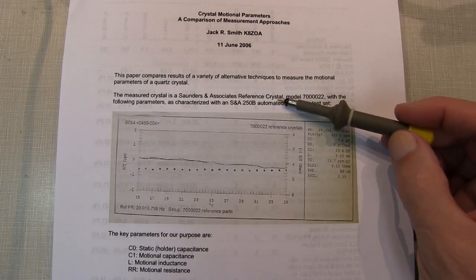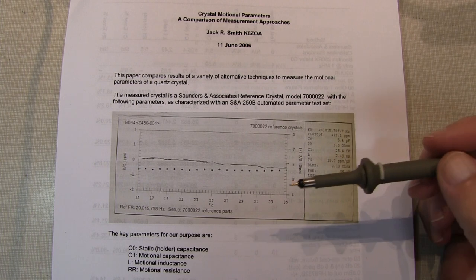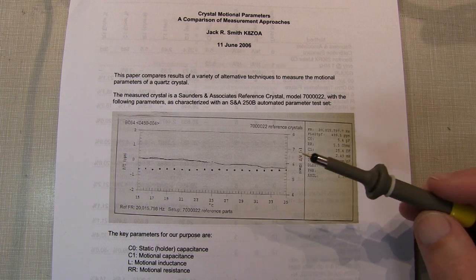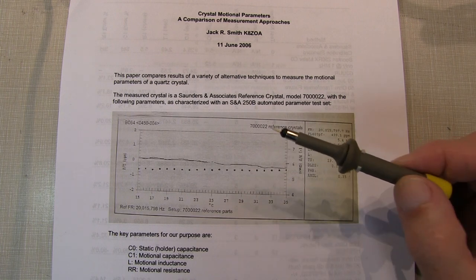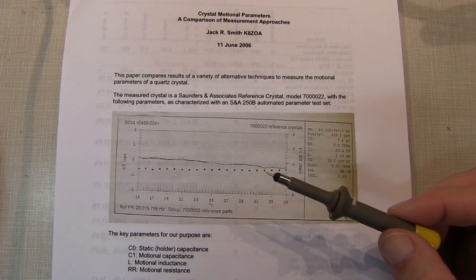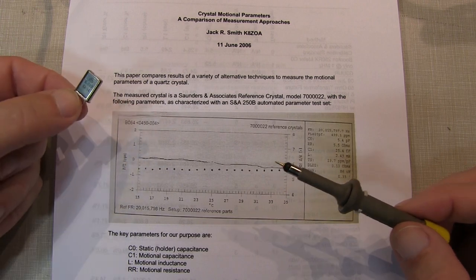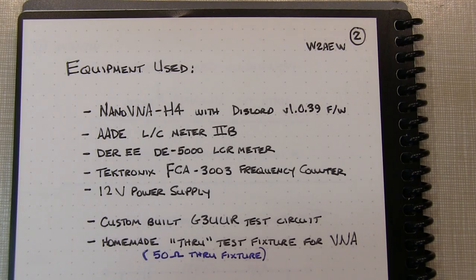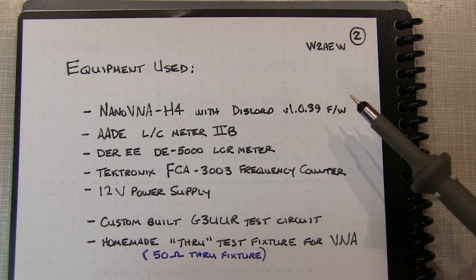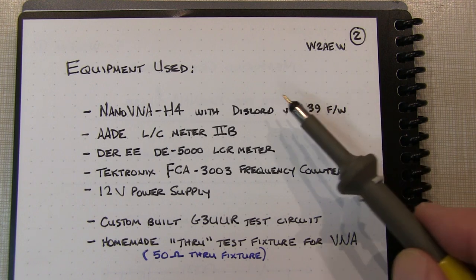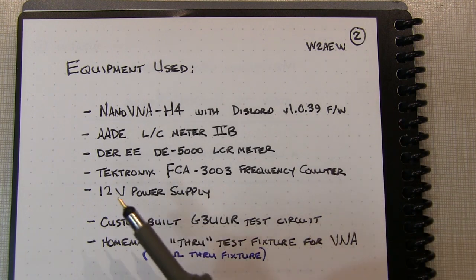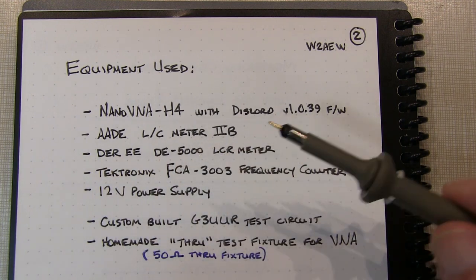Of course, I don't have access to a precisely characterized reference crystal or a lot of the specialized equipment that Mr. Smith used for this paper. So what we're going to do is just take a look at five or six different measurement techniques using the nanoVNA and a couple of other tools, and just compare those results to each other based on a crystal that I pulled out of my junk box.